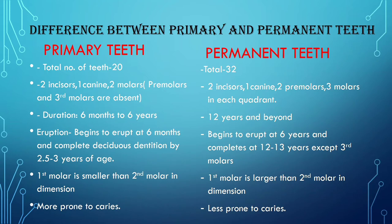The first tooth to erupt in the oral cavity in primary dentition is the mandibular incisor. In permanent dentition, the mandibular first molar is the first to erupt. The first molar is smaller than the second molar in primary dentition, while in permanent dentition the first molar is larger than the second molar. Primary teeth are more prone to caries, while permanent teeth are less prone.